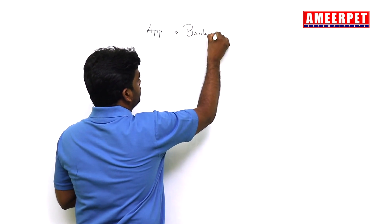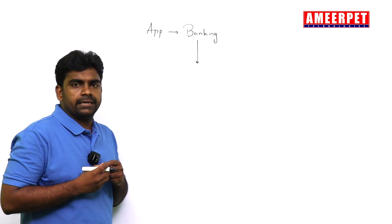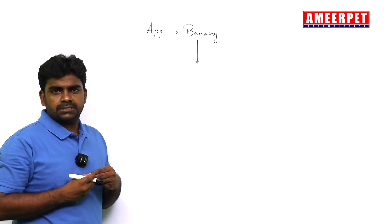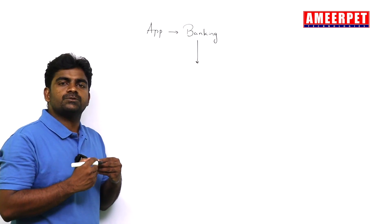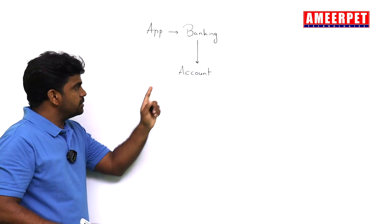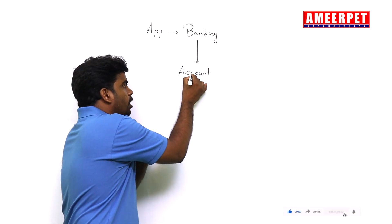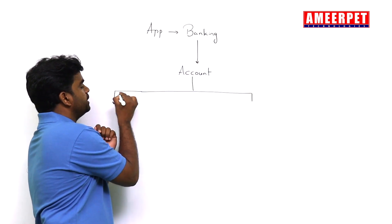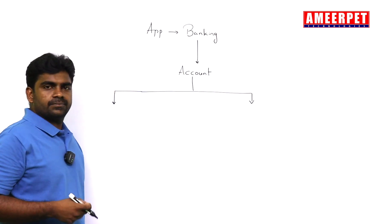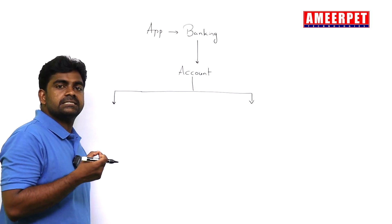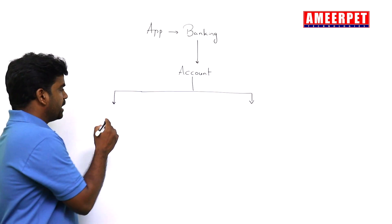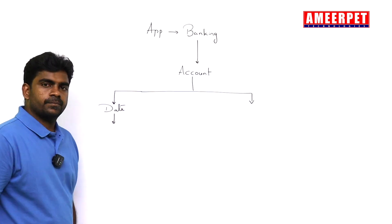I am explaining with an example called banking. Banking always provides services to customers — customers means account holders. So I am taking an account holder as one program. We need to create programs for account holders. Every program consists of information and data.